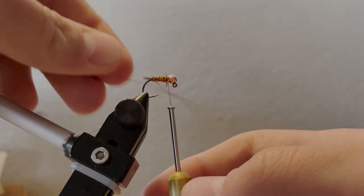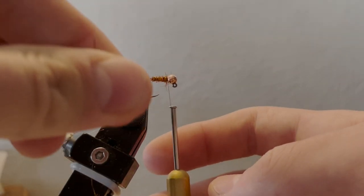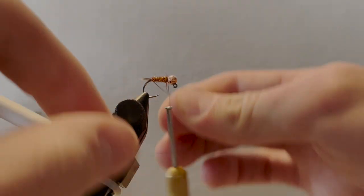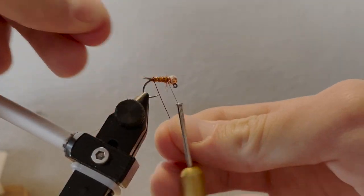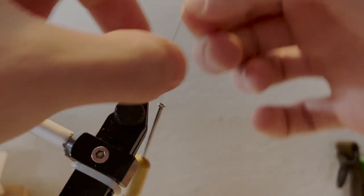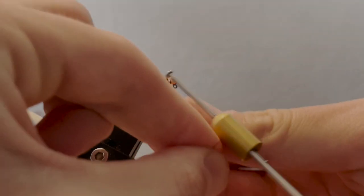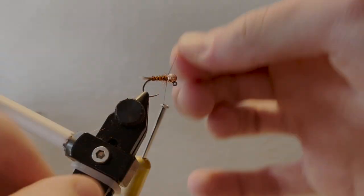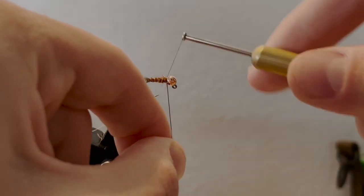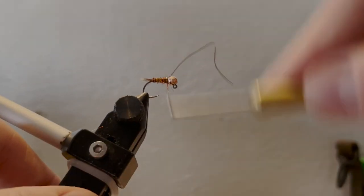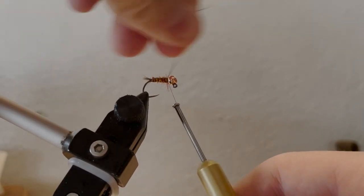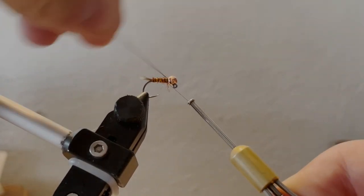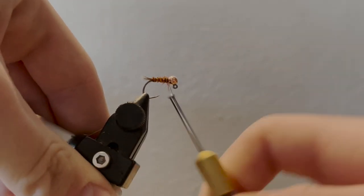Next, take your wire and counter-wrap in a different direction than what you put the dubbing in. Open spiral wraps up to the head of your fly, secure it, and helicopter it off so it has a clean break.